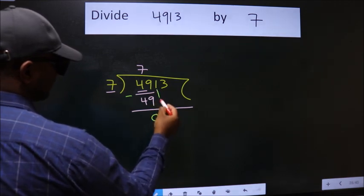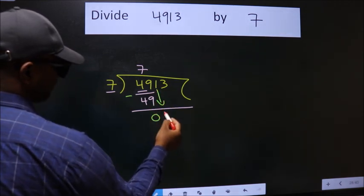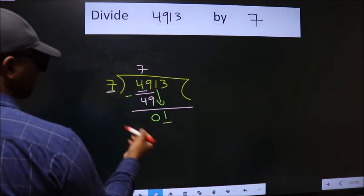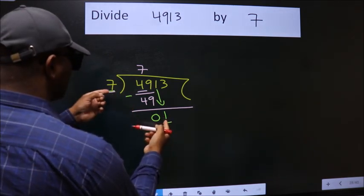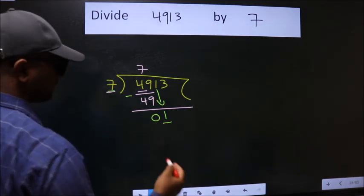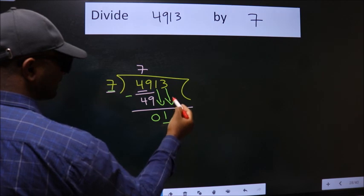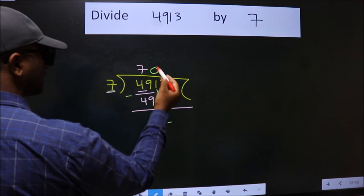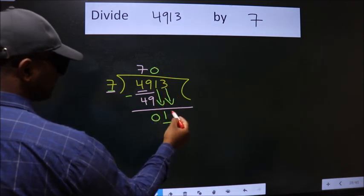After this, bring down the beside number. So 1 down. Here we have 1. Here 7. 1 is smaller than 7, so we should bring down the second number. And the rule to bring down the second number is put 0 here. Then only we can bring down this number.